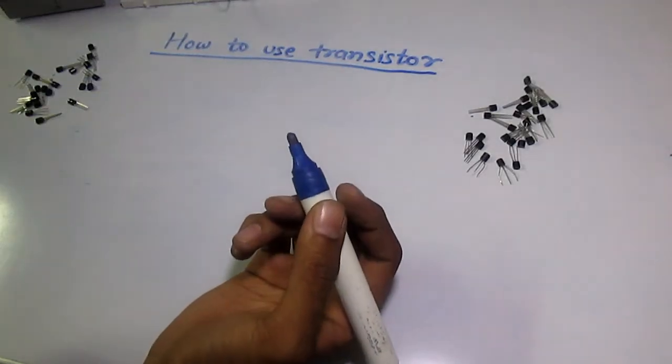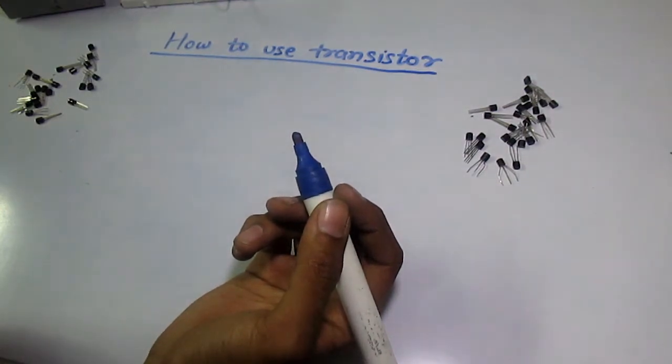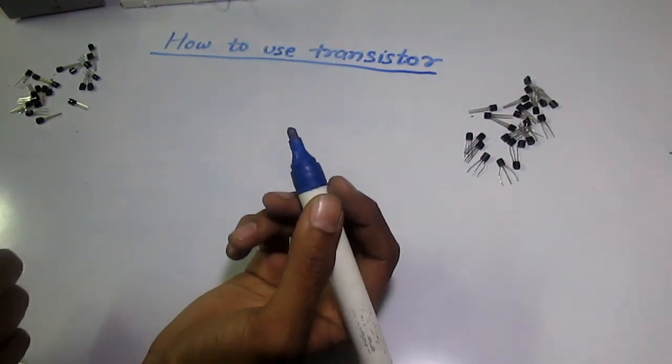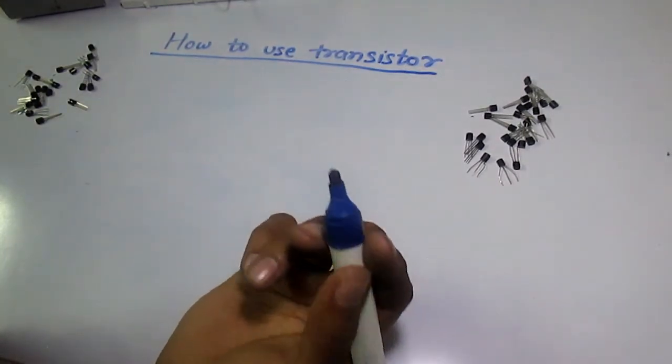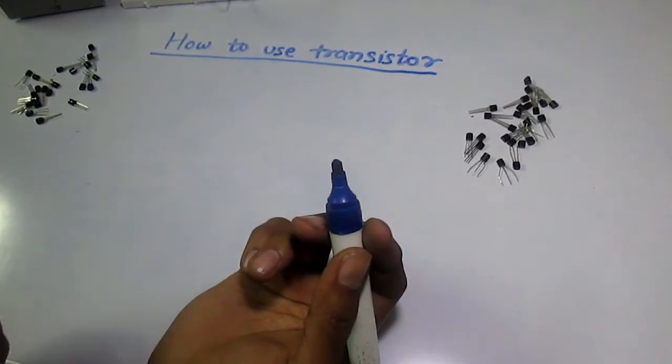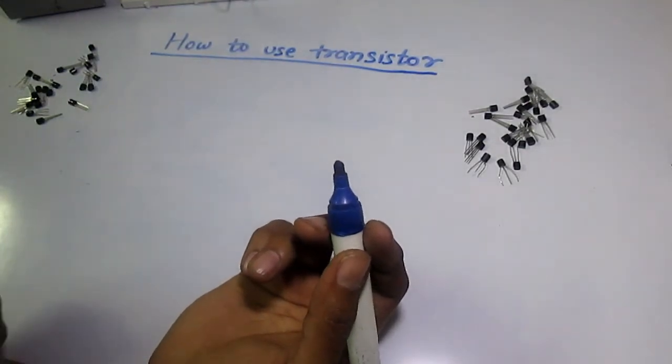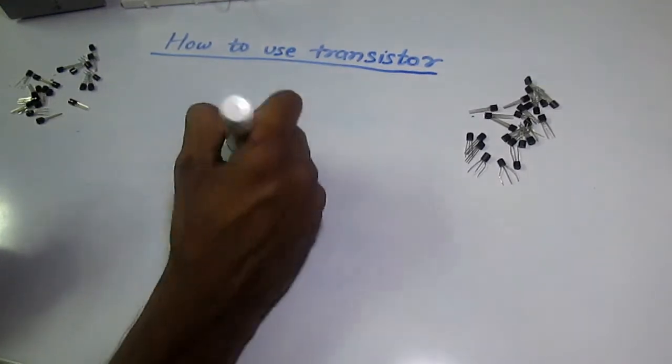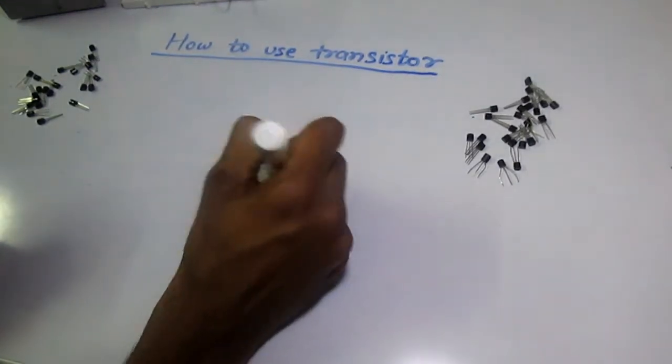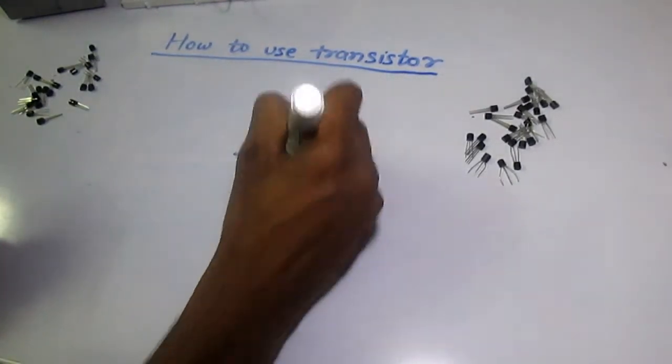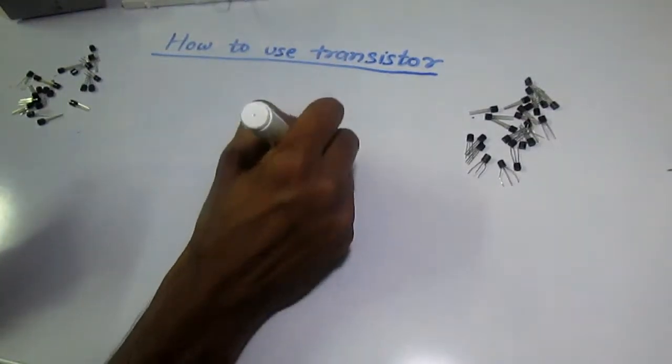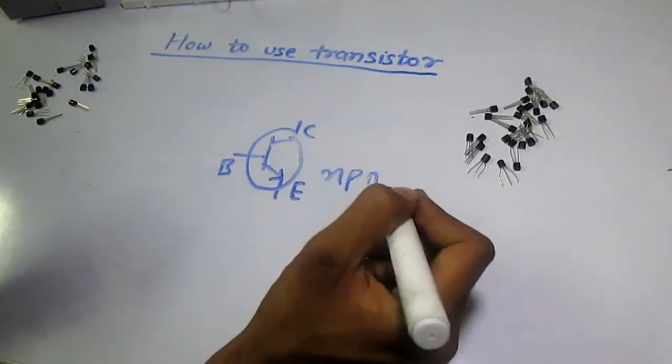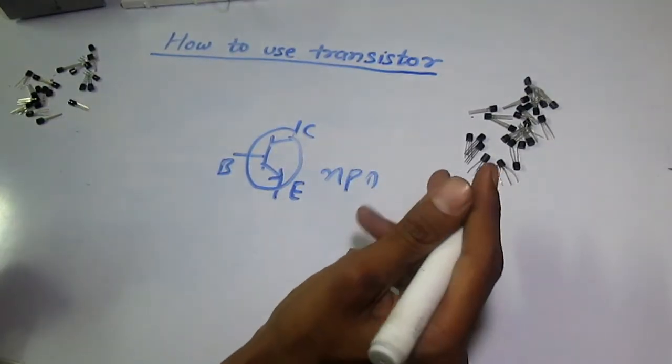Hi guys, in this video we're going to learn how to use a transistor. The basic transistor that everybody uses is a bipolar NPN junction transistor. Basically, transistors are used as a switch or for amplification purposes. The symbol of a transistor is this - it's an NPN junction transistor.